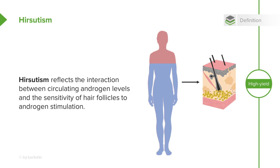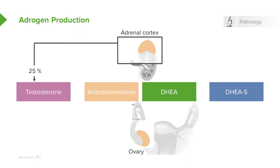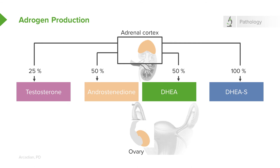Let's review the normal physiology of adrenal cortex and ovarian androgen production. When it comes to testosterone, the adrenal cortex makes about 25%. Androstenedione accounts for 50%, DHEA another 50%, and DHEAS or sulfated DHEA, 100%. You can have peripheral conversion of DHEAS to DHEA — sulfatase will cleave the sulfate group. The ovaries also produce androstenedione, DHEA, and testosterone.